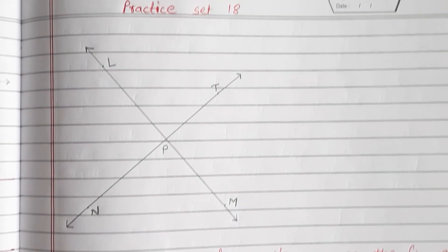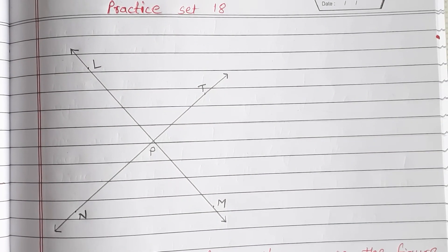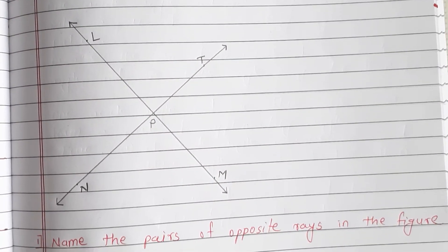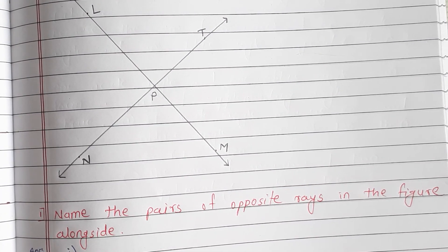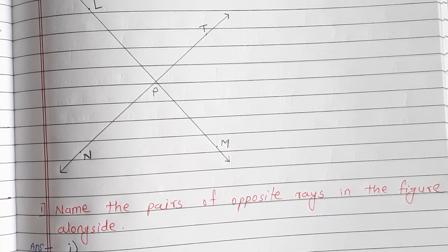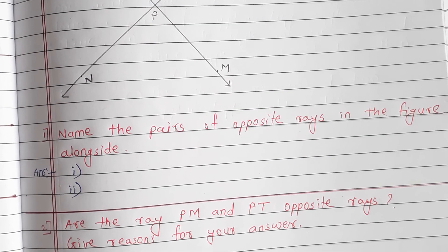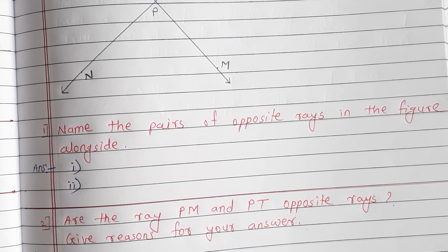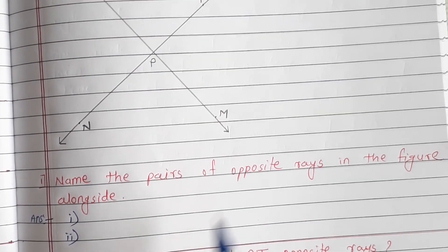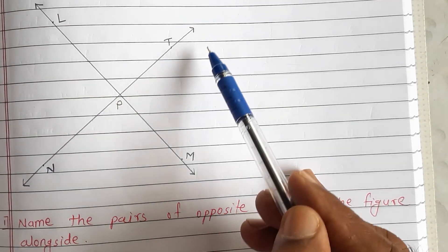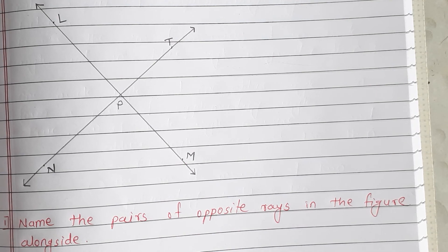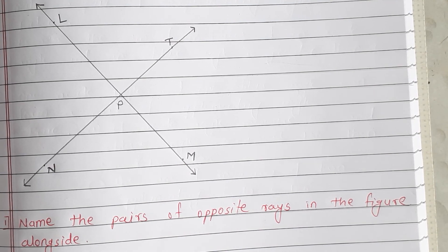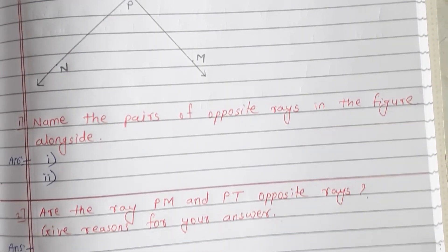We can say that this is Practice Set 18. Name the pairs of opposite rays in the figure alongside. We can say two pairs are opposite rays. Are Ray PM and Ray PT opposite rays? Ray PM and PT are opposite rays. Give a reason for your answer.